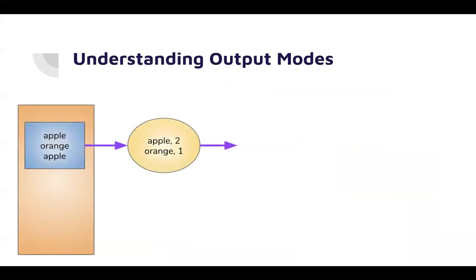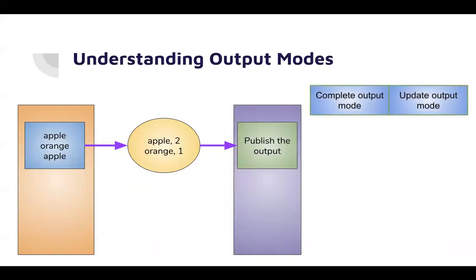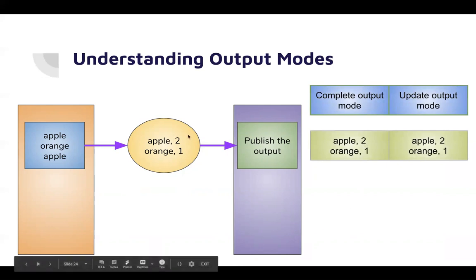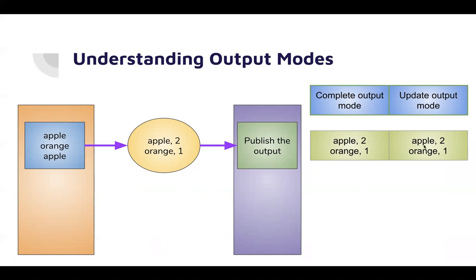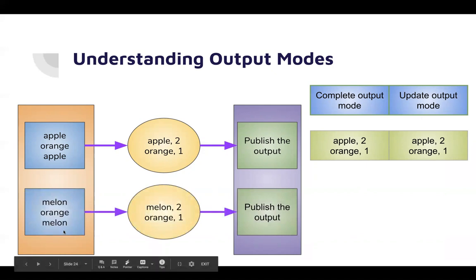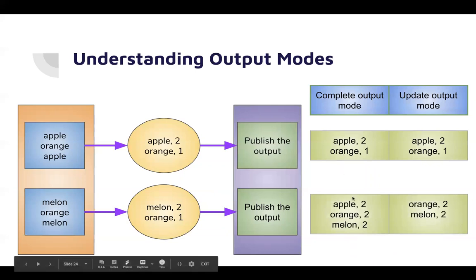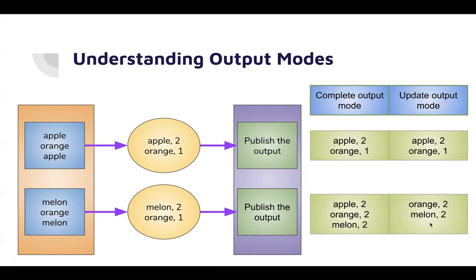Let's look at an example. In the first micro batch we receive three words and the word count shows apple twice and orange once. In complete output mode it will publish the entire result set. In update output mode it's the same for the first micro batch because everything is new — there was no previous history. Now for a second micro batch with melon coming twice and orange once: in complete output mode you send the entire result, but in update output mode only the entries which have a different value than the previous micro batch are produced — hence the output differs based on which mode you choose.